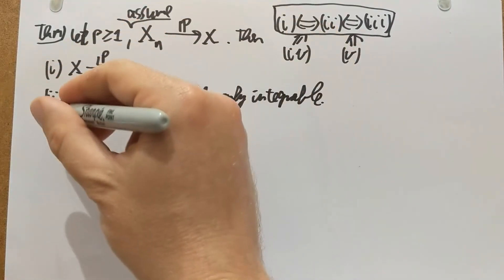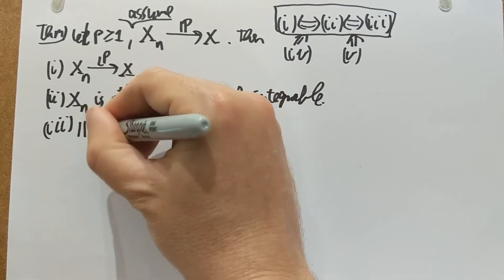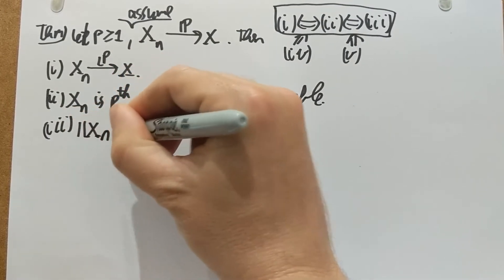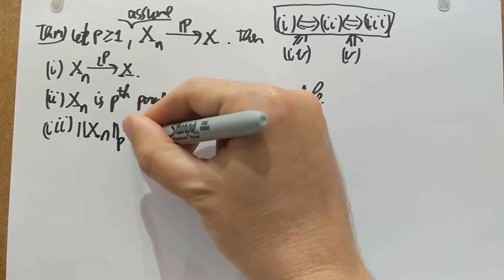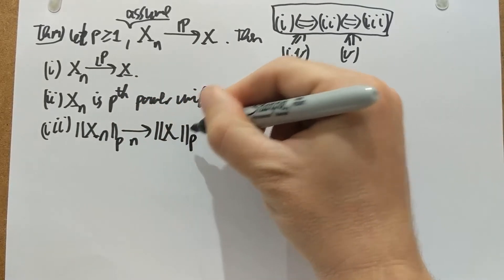Statement three is that the p norms converge. So xn p norm converges to x p norm. That's statement three.